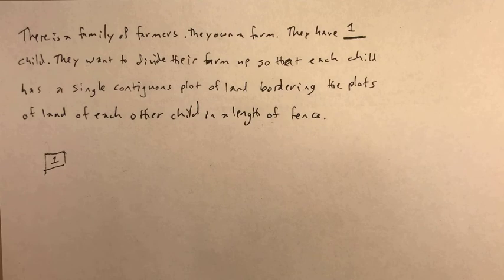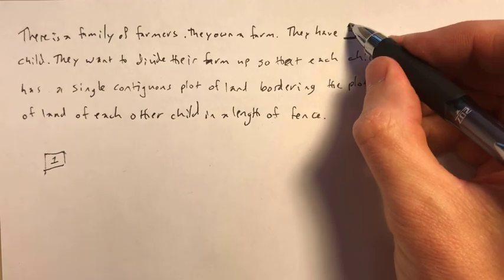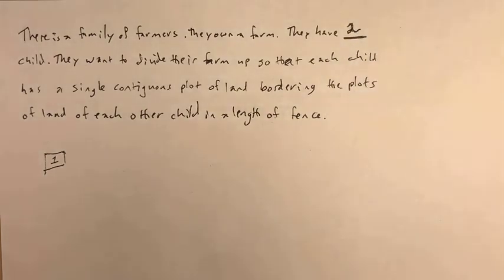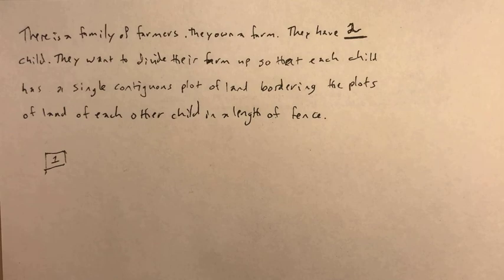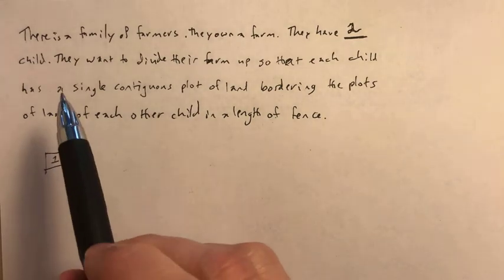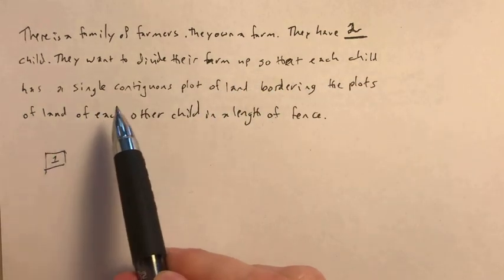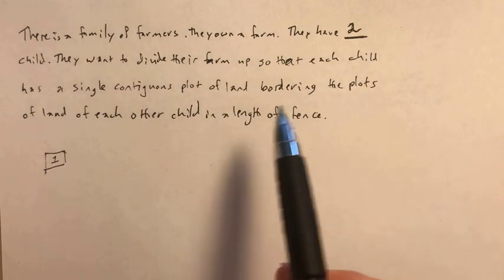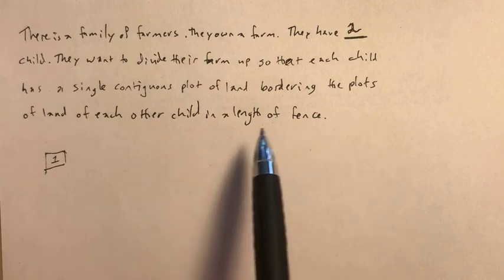But here's the thing, farming isn't always so simple. Something that happens on the farm is animals reproduce, including humans, and that one child through love and affection became two children. So now they still want to divide up their farm so that each child has a single contiguous plot of land bordering the plots of land of each other child in a length of fence.